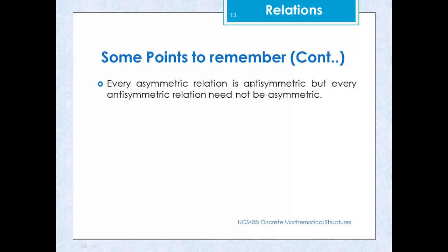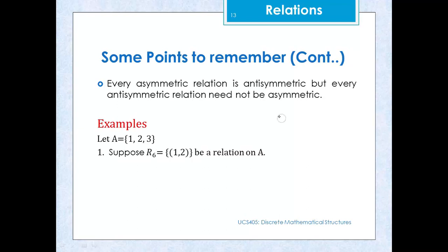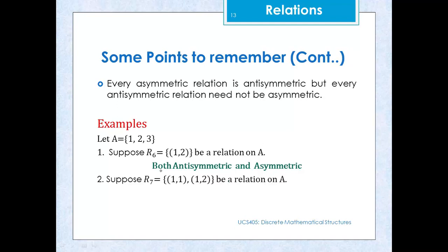Every asymmetric relation is antisymmetric, but every antisymmetric relation need not be asymmetric. For example, R6 = {(1,2)} is both antisymmetric and asymmetric. But R7 = {(1,1), (1,2)} is antisymmetric because self-loops are allowed in antisymmetric relations and we don't have (y,x) whenever (x,y) is present. However, R7 is not asymmetric because self-loops are not allowed in asymmetric relations.